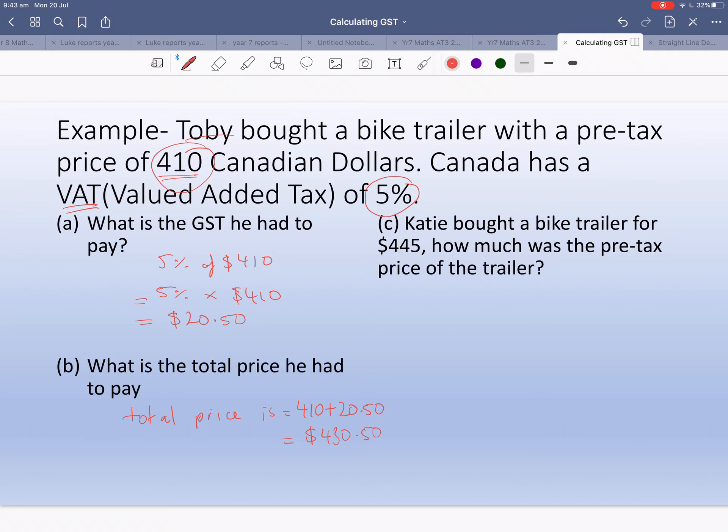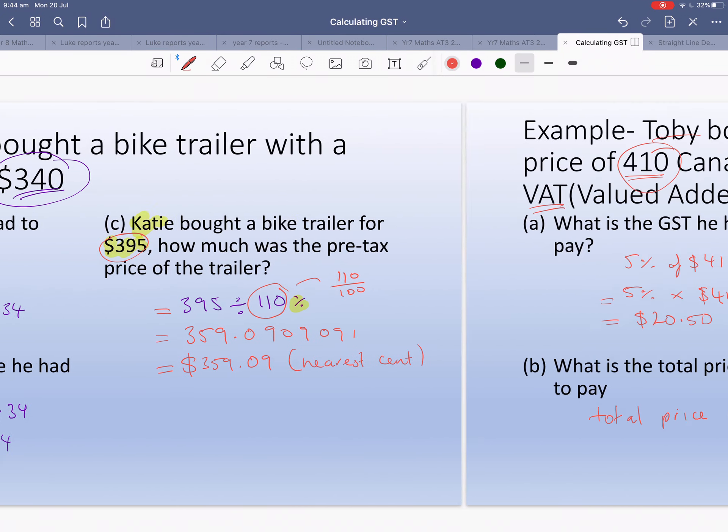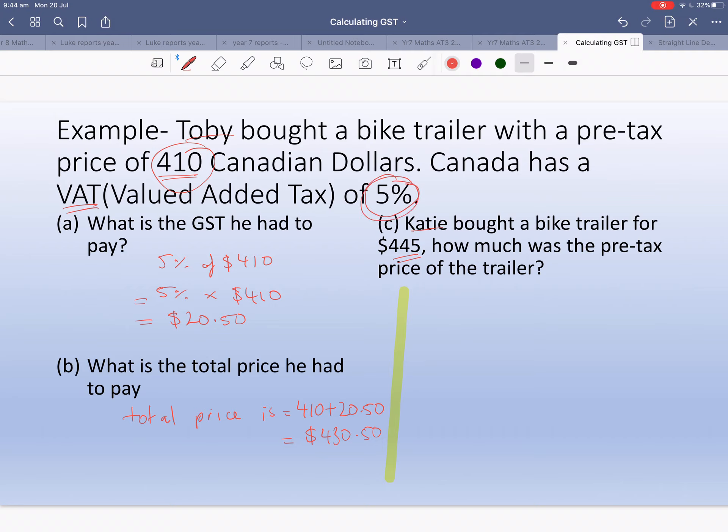Same question: Katie bought a bike trailer for $445. What was the pre-tax price? We're going to do the same thing except instead of dividing by 110, we're dividing by 105 because it's 5%. So $445 divided by 105%. Make sure you include the percentage symbol. You get an answer of $423.81 rounded to the nearest cent.